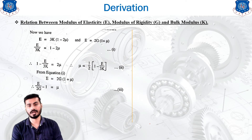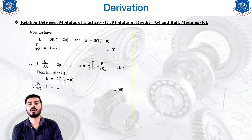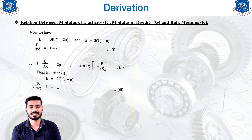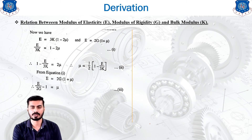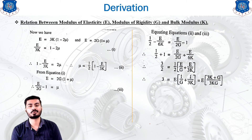From equation E = 2G(1 + mu), making mu the subject: mu = E/(2G) − 1. Now we have expressed mu from two different relationships, and we are going to equate those two expressions for mu.